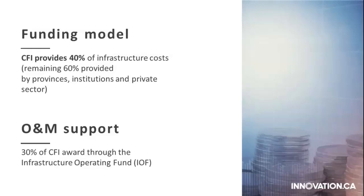The CFI exclusively funds infrastructure rather than operating funds. However, for all CFI funds, there's an automatic allocation of 30% for operating and maintenance support — the O&M funds. We call this the Infrastructure Operating Fund or IOF. The IOF proportion is 30% of the 40% CFI, so it's 12% of the total costs. For some smaller projects that is all the funding they may need for O&M. But for the larger Innovation Fund projects, it's likely just a small component of the total funding they will need for O&M and short and long term sustainability.